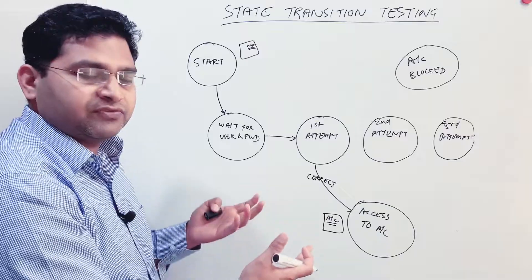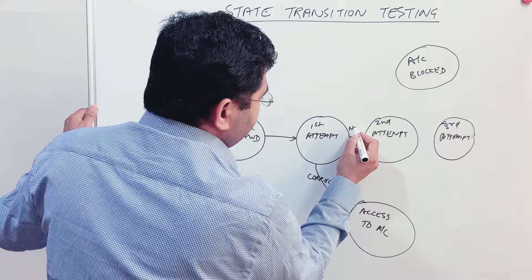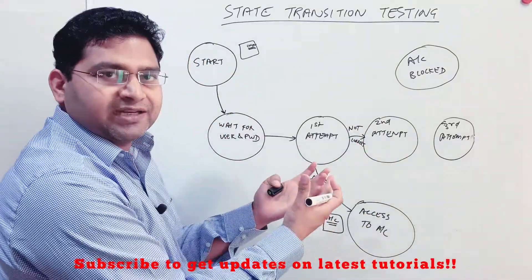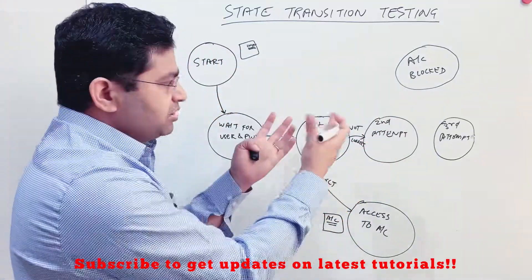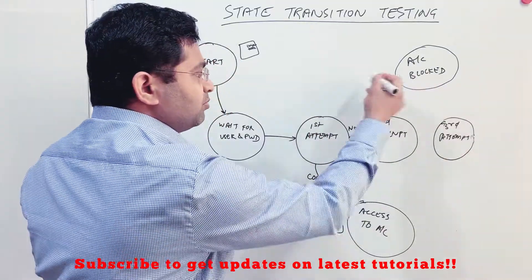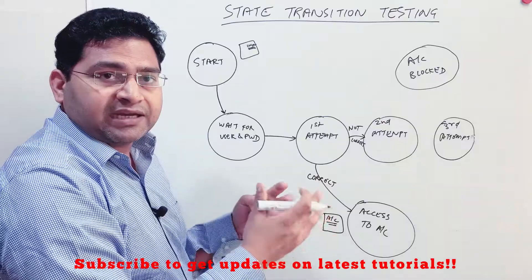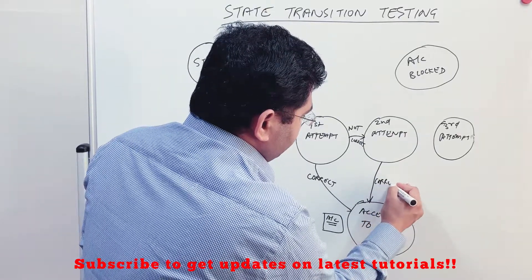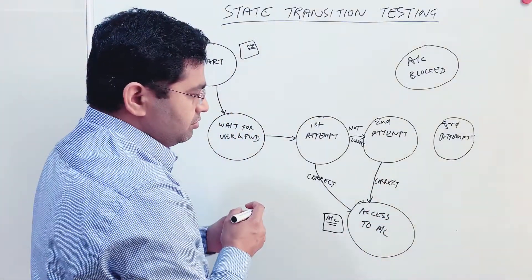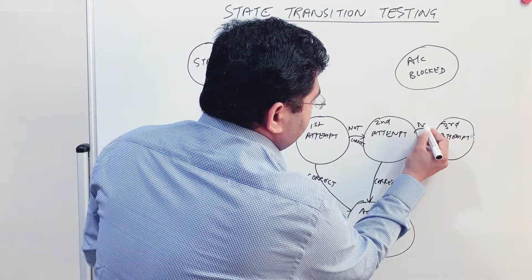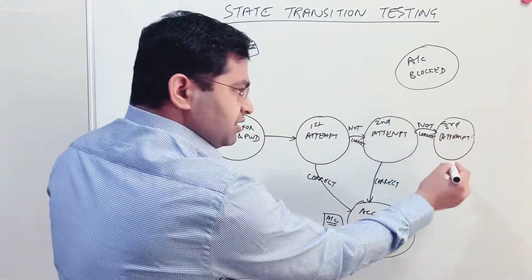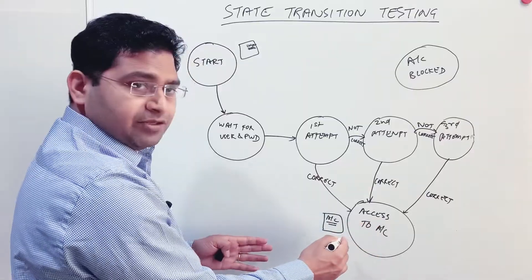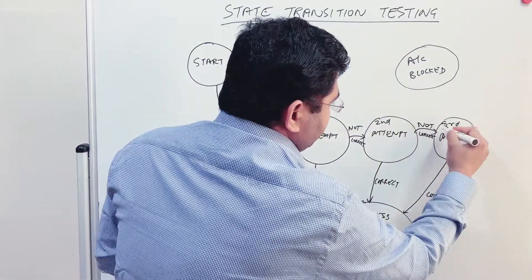If the credentials are not correct in the first attempt, the user will be prompted for a second attempt with an appropriate message displayed — the account won't get blocked yet because the user is given three attempts. In the second attempt, if correct, they get access to account; if not correct, they are given a third attempt. In the third attempt, if correct, they are provided access to account.